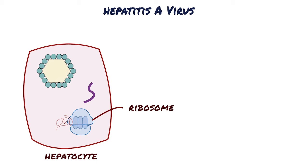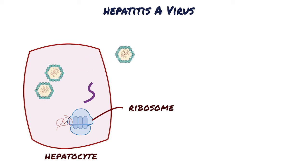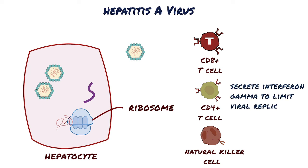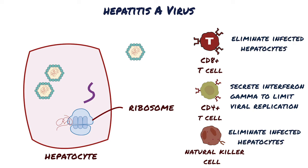Viral proteins and RNA bind to make new viral particles that exit the cell by exocytosis. They can also exit when the infected cell is destroyed by the immune system. The immune system reacts by bringing CD4+ and CD8+ T cells and natural killer cells to the liver. CD4+ T cells secrete interferon gamma to limit viral replication. CD8+ T cells, also known as cytotoxic T cells, along with natural killer cells, eliminate infected hepatocytes and Kupffer cells, mostly by inducing programmed cell death, called apoptosis.